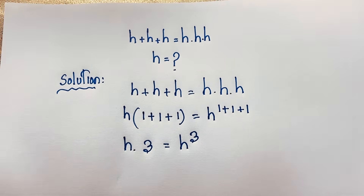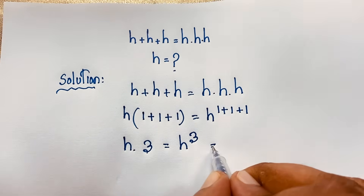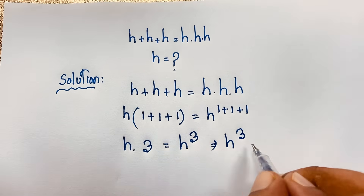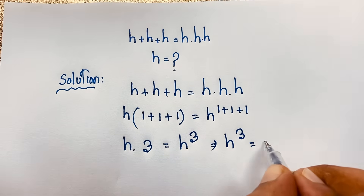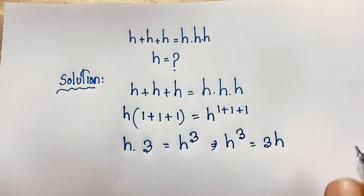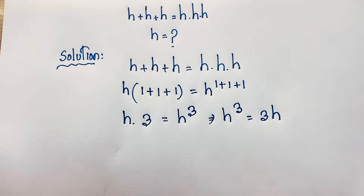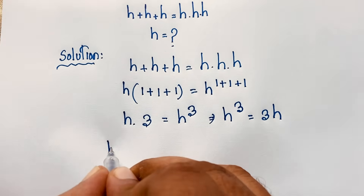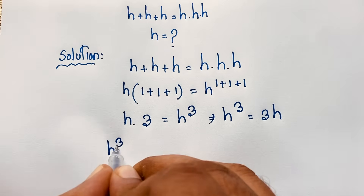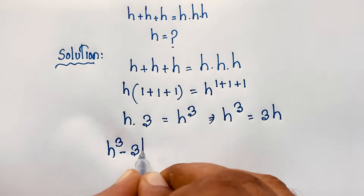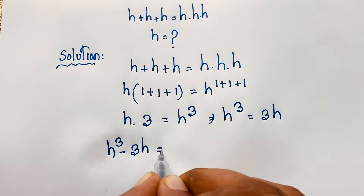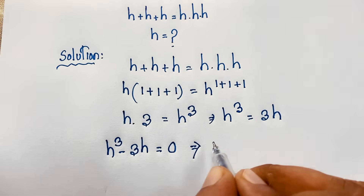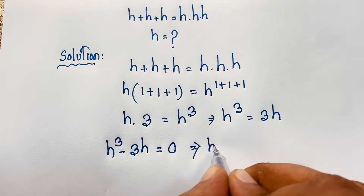Now here h times 3 on the left, and h to the power 1 plus 1 plus 1, which equals 3, on the right. So we find it will be h to the power 3 equals 3h. Moving this to one side: h³ minus 3h is equal to 0.